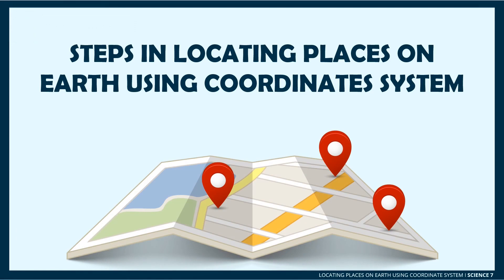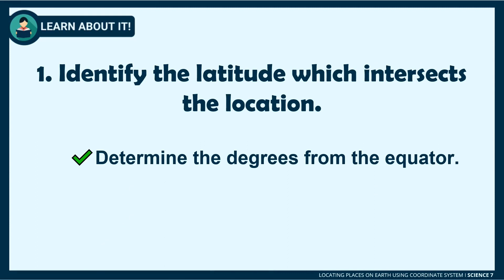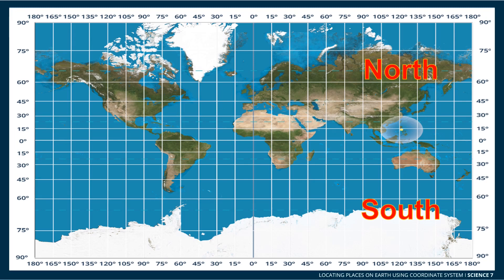Now let's learn how to locate places on earth using the coordinate system by following these simple steps. Step one: provide the latitude which intersects the location. Determine the number of degrees from the equator, then indicate its direction as north or south. For Manila, Philippines, located near the equator and below the 15-degree line, the latitude is 14 degrees north.